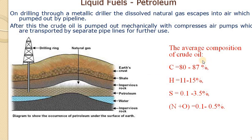The average crude oil composition is: carbon around 80 to 87 percent, hydrogen 11 to 15 percent, sulfur around 0.1 to 3.5 percent, with traces of nitrogen and oxygen.